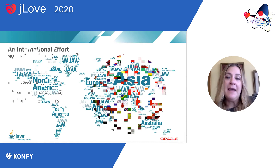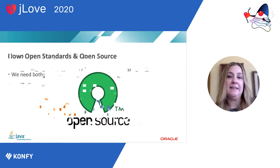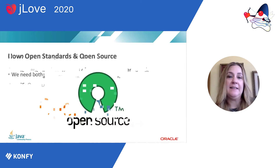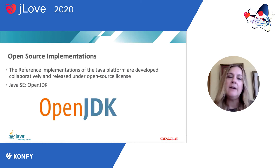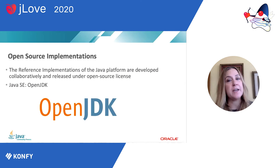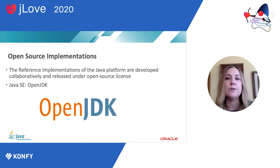The main project being developed through the JCP right now is the Java platform — Java SE. Every version of Java SE is developed as a JSR in the JCP. Underneath the JSR there's a collection of Java Enhancement Proposals, or JEPs, which are developed in OpenJDK. The JCP and OpenJDK work together. The reference implementations of the Java platform are developed collaboratively and released under open source license, and the JEPs feed up into a JSR that is ratified by the JCP executive committee before it can be used in production.